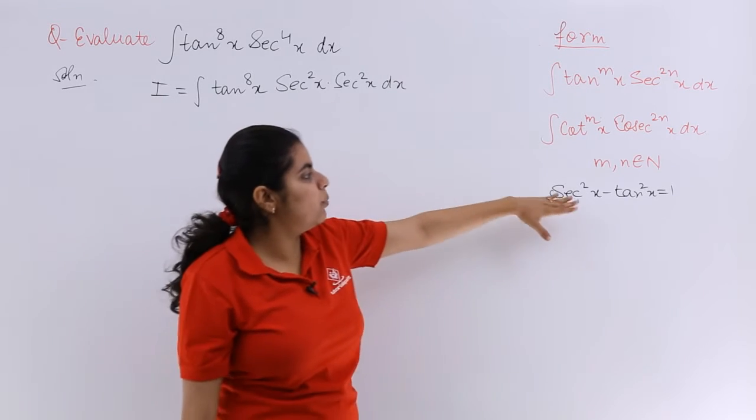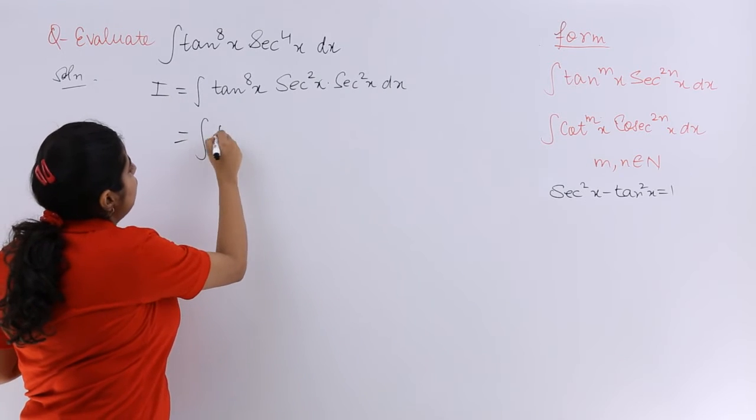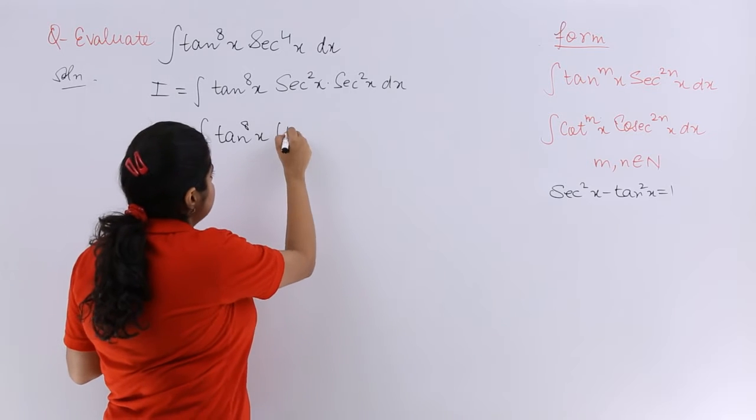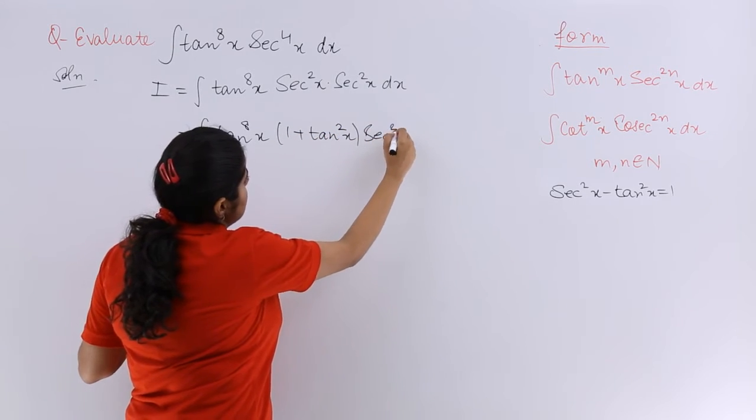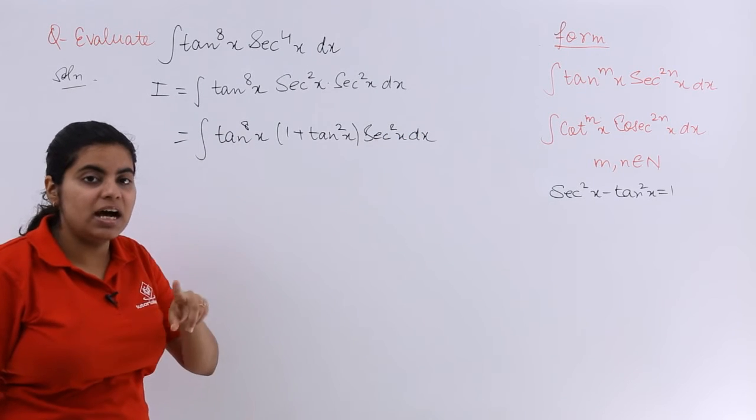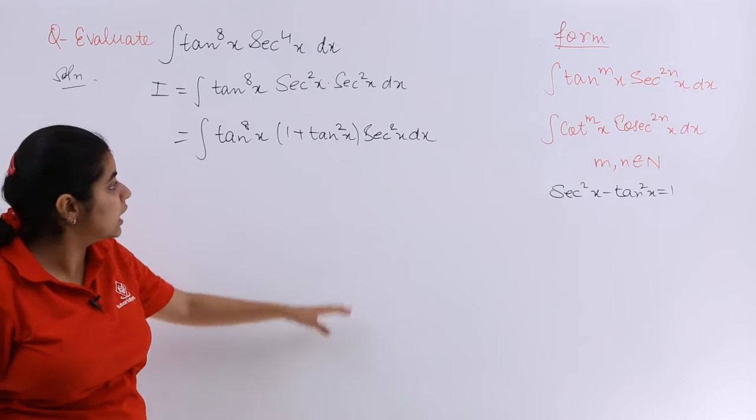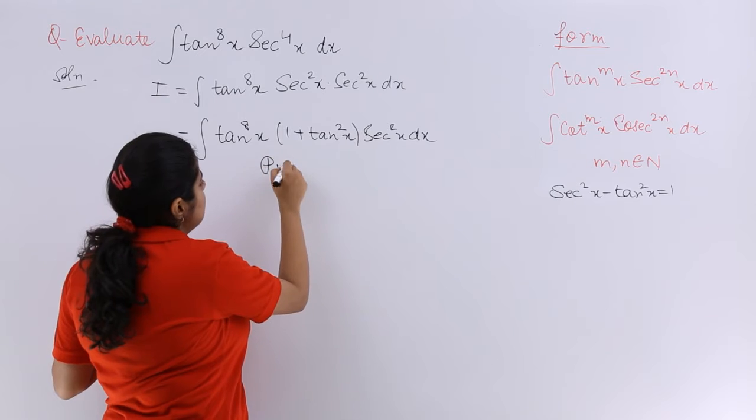Now secant square x formula is what? 1 plus tan square x, that I will be writing for one of the secants. So it is 1 plus tan square x secant square x dx. Now I have to use substitution because integration under substitution we are seeing. If I write my tan x equals t, how things change? Let's see.